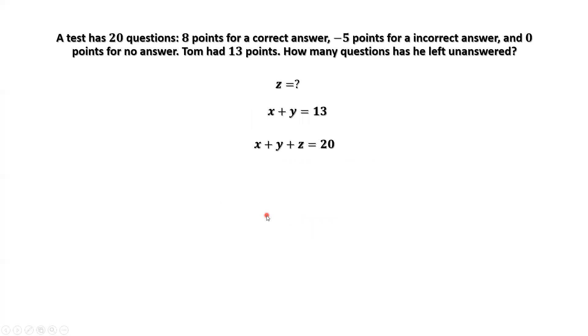From the given condition, total number of questions is 20, including three different situations. X plus Y plus Z equals 20. X plus Y equals 13, what is Z? Z equals 20 minus 13 equals 7. Seven is the final answer.